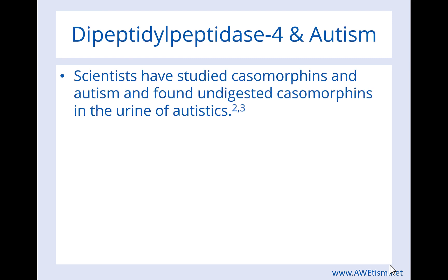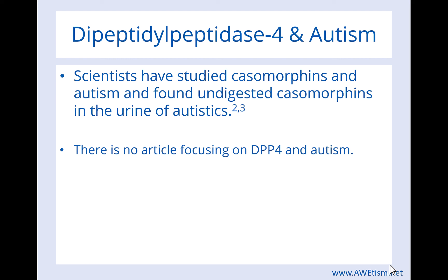DPP4 and autism: scientists have studied casomorphins and autism and found undigested casomorphins in the urine of autistic individuals. There is certainly published research on this — you can go to the links and read the research yourself. This research started around the 1980s, so this information has been prevalent in the scientific literature for decades. However, there is no article focusing specifically on DPP4 the enzyme and autism — the literature addresses undigested casomorphins generally, but nothing specific to DPP4 itself.